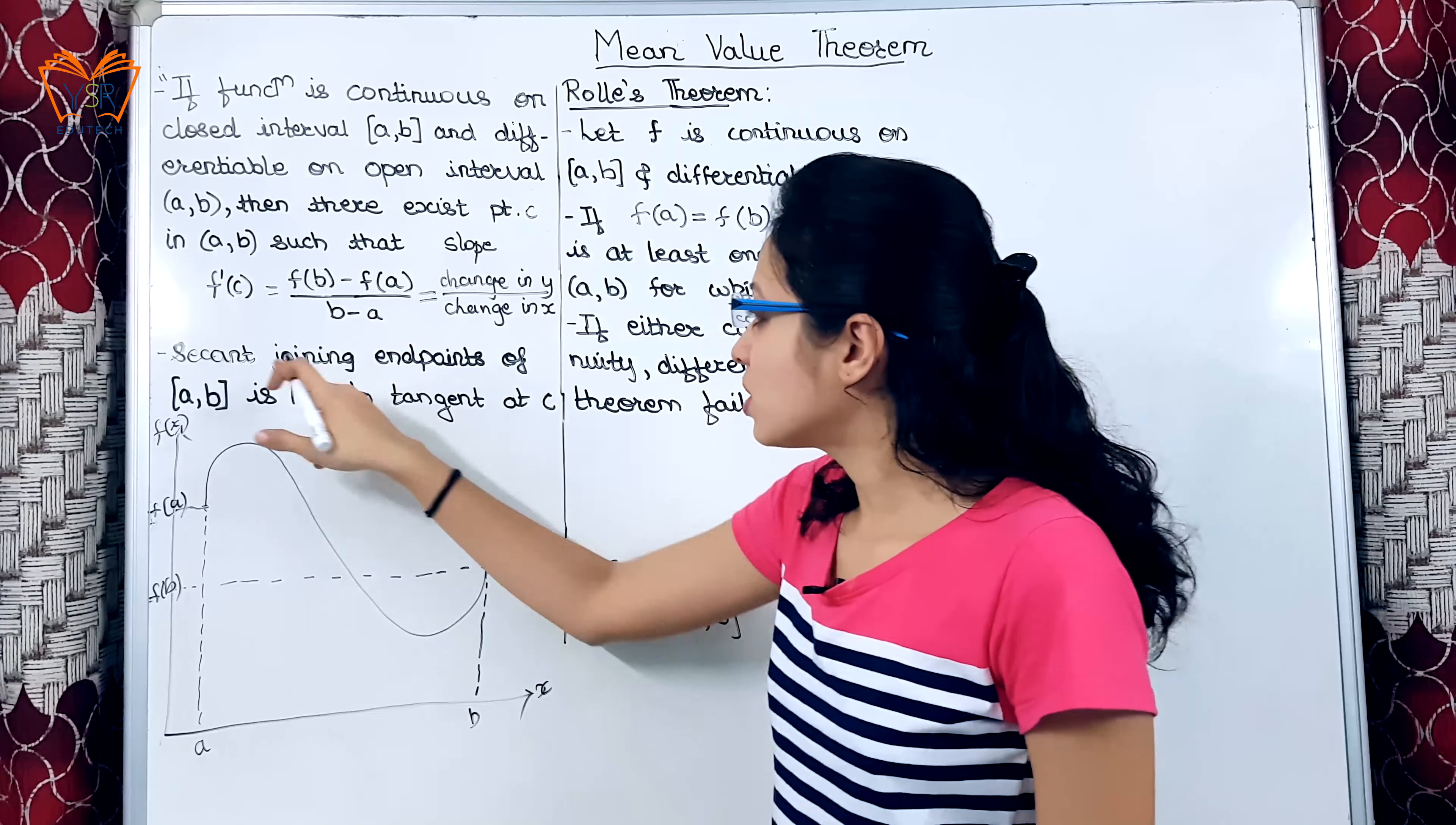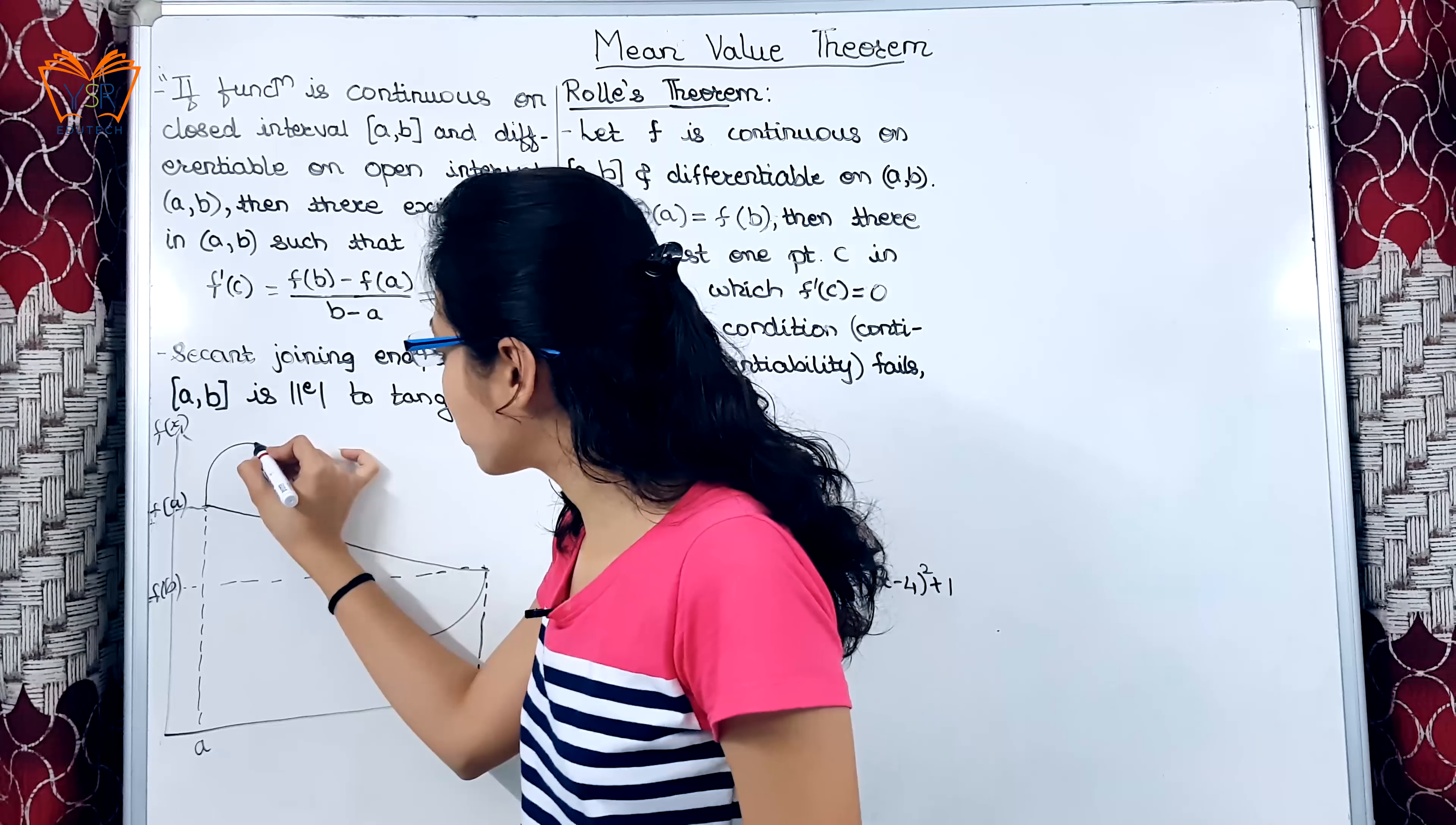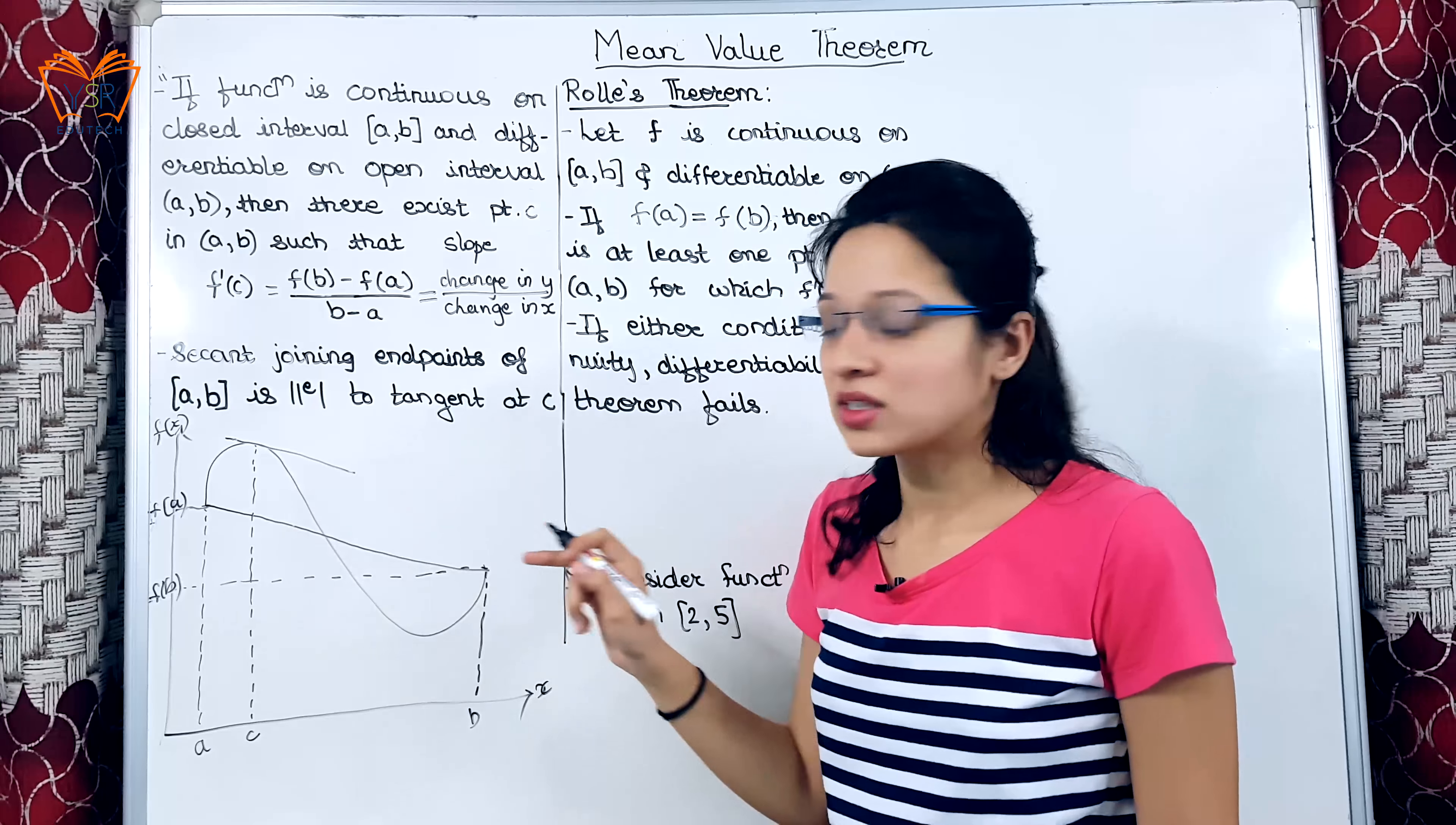So, this will be f(a) and this point will be f(b). What does the mean value theorem say? Secant joining endpoints a and b. This is the secant that joins a and b. This is parallel to tangent at point c.